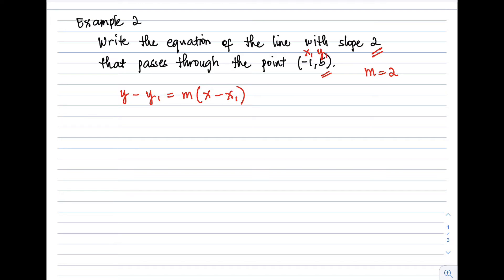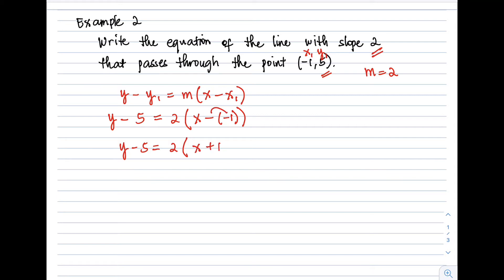Substituting into the formula: y − 5 = 2(x − (−1)). Simplifying the binomial inside, the two negatives make a positive, so we get y − 5 = 2(x + 1).